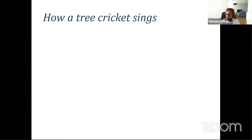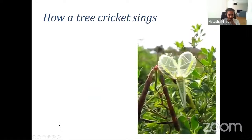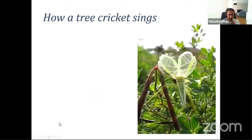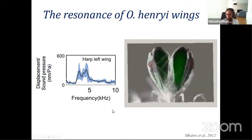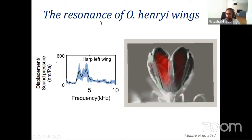Here are videos of what that looks like — that is a tree cricket singing. If you look at the wings using the method I'll introduce shortly, you can measure what's happening in the vibrating wing. What we can see is that the whole wing moves in unison when vibrated at that frequency. It has what we call a resonance: the wing resonates at the frequency that the animal produces sound.